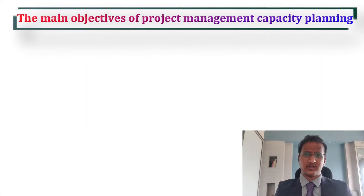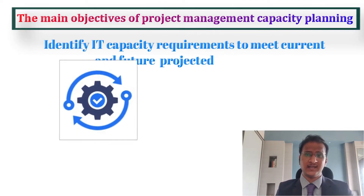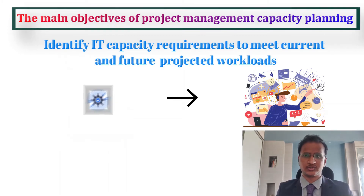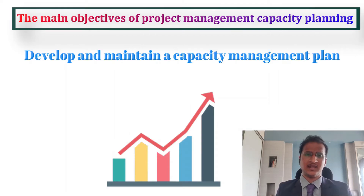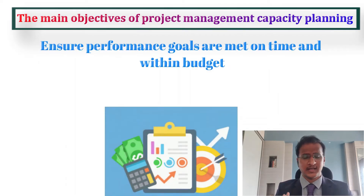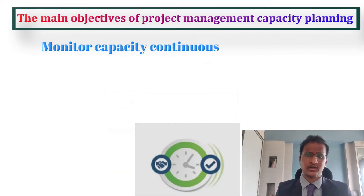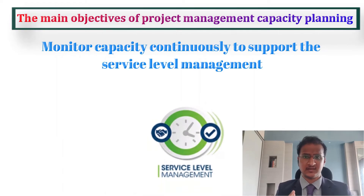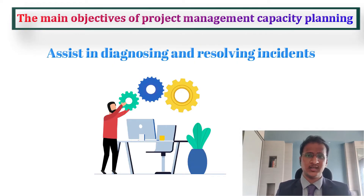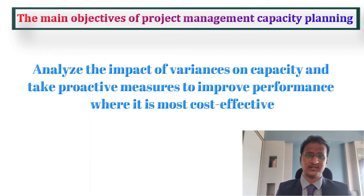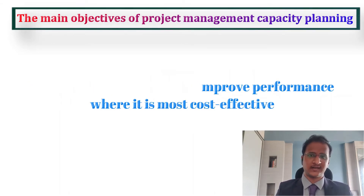The main objectives of Project Management Capacity Planning are as follows: identify the IT capacity requirements to meet current and future projected workloads; develop and maintain a Capacity Management Plan; ensure the performance goals are met on time and within the stipulated budget; monitor capacity continuously to support the service level management; assist in diagnosing and resolving incidents; and analyze the impact of variances on capacity and take proactive measures to improve performance where it is most cost-effective.